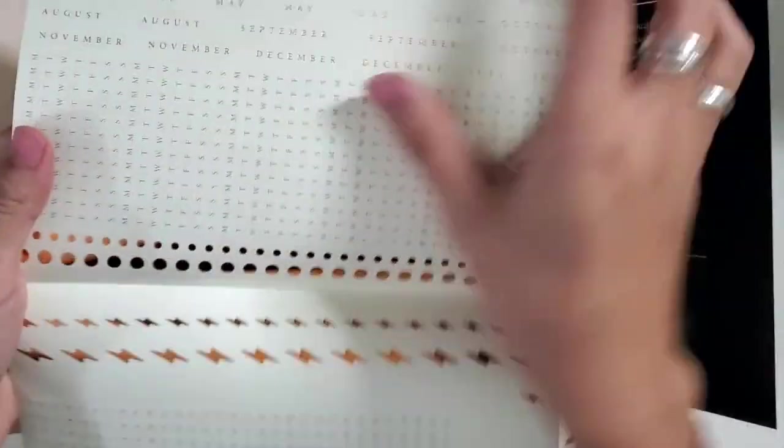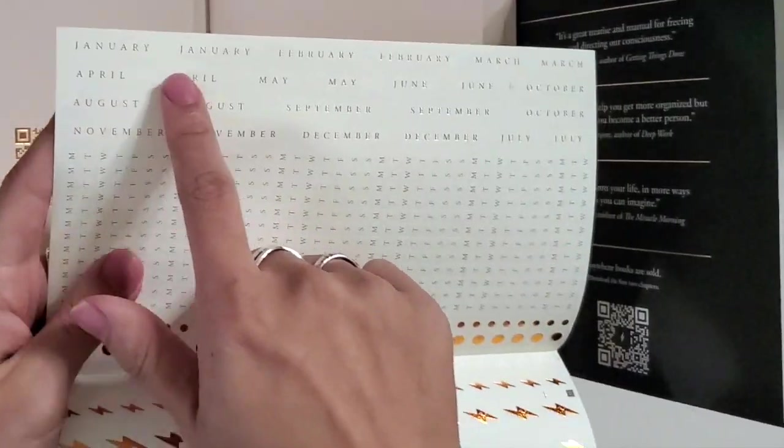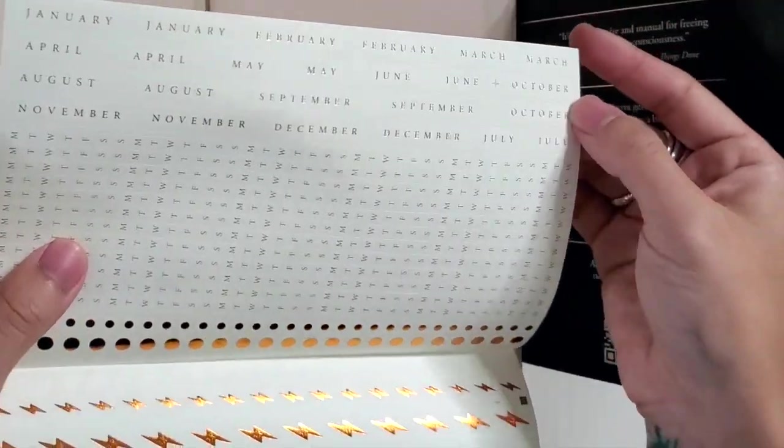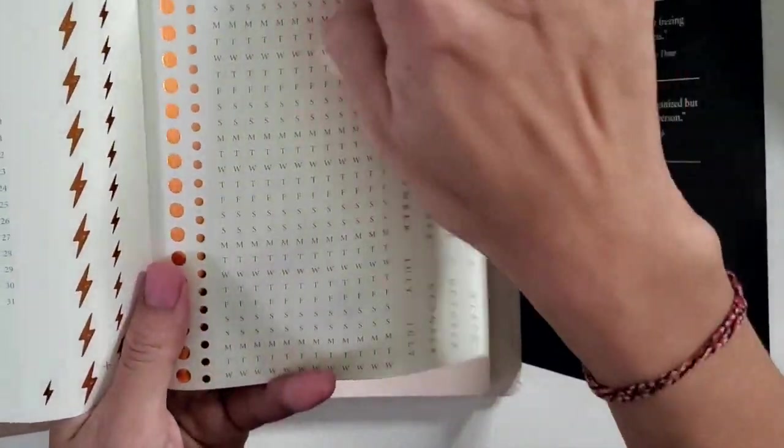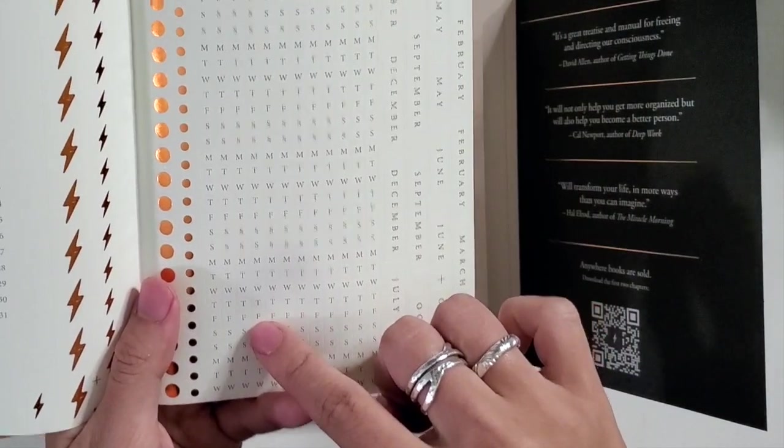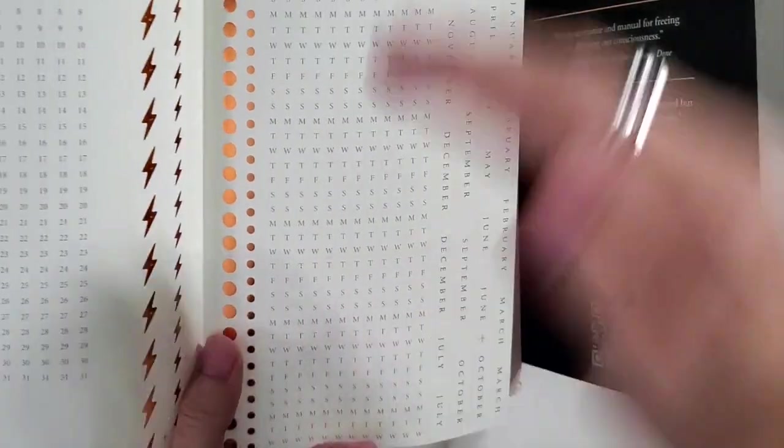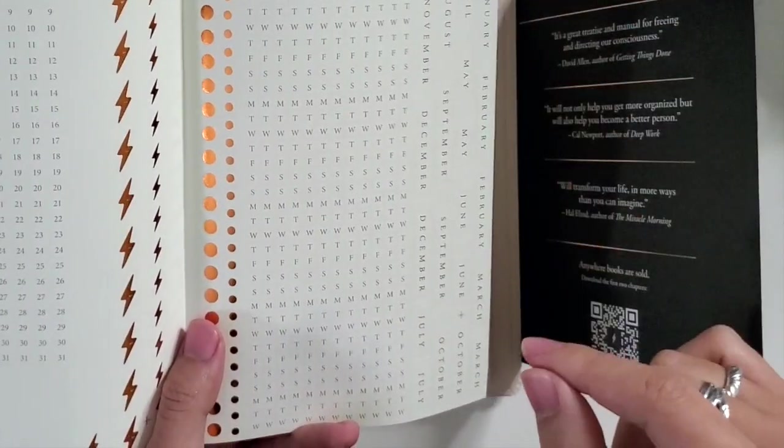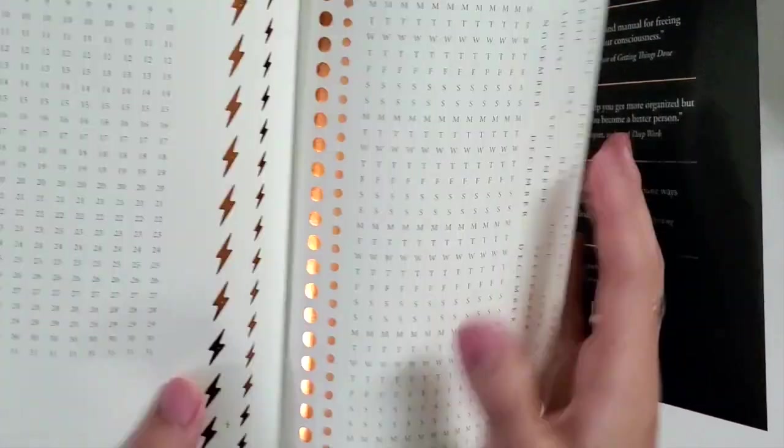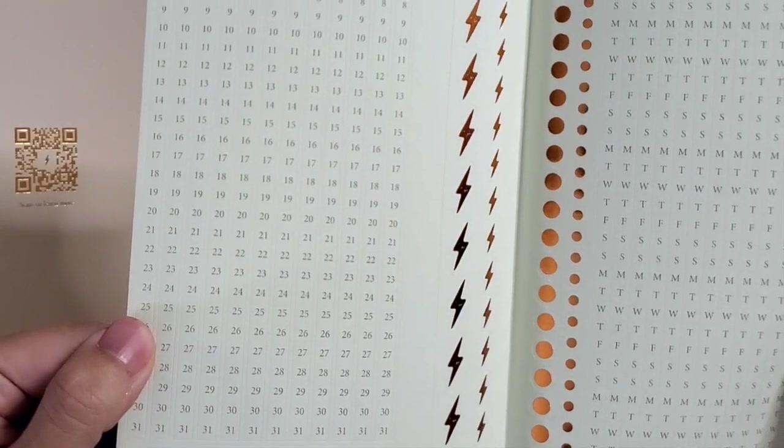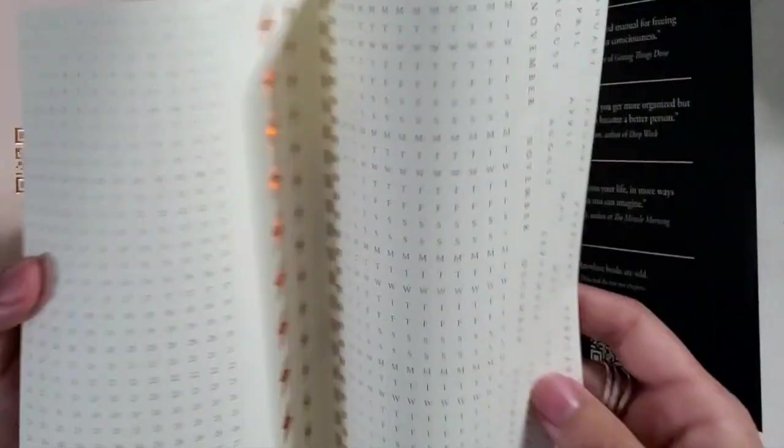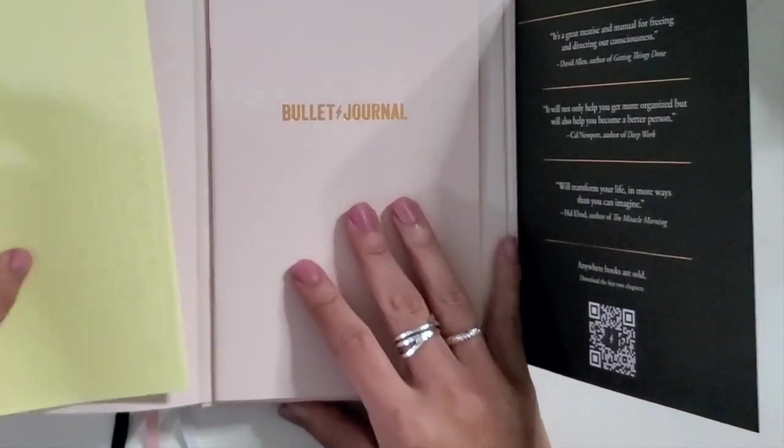Now you can add these stickers in. It's got the months in this beautiful, classy foil. And then it has these charts, which I think are for your monthly logs or monthly when you go on the side and you're marking the dates. Oh my God, that's so cool. And then you have the numbers for the side, I assume will be for the month log.